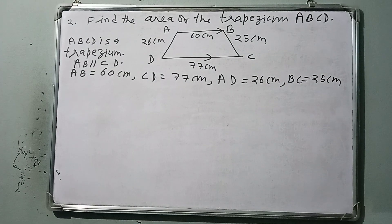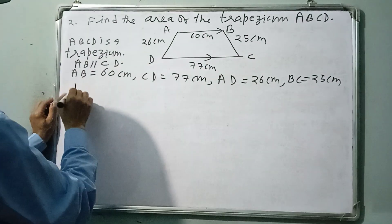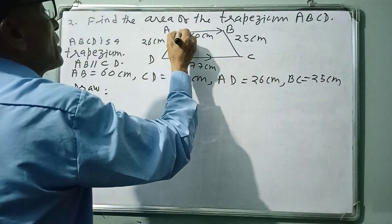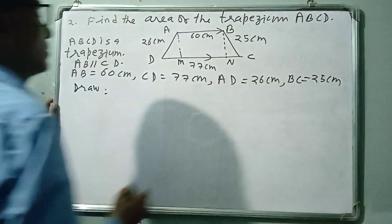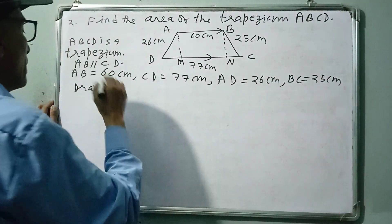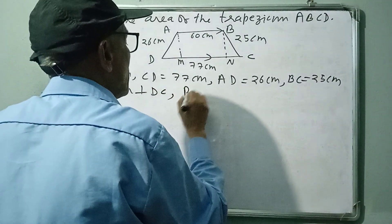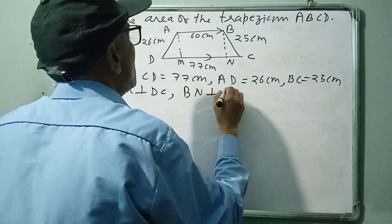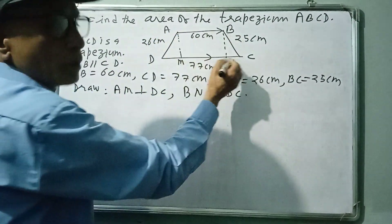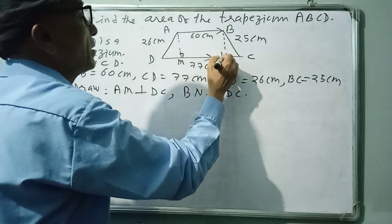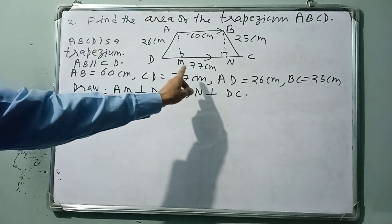For construction, draw two perpendiculars: AM perpendicular to DC and BN perpendicular to DC. Since AB is parallel to MN, and we have two right angles, ABNM is a rectangle.